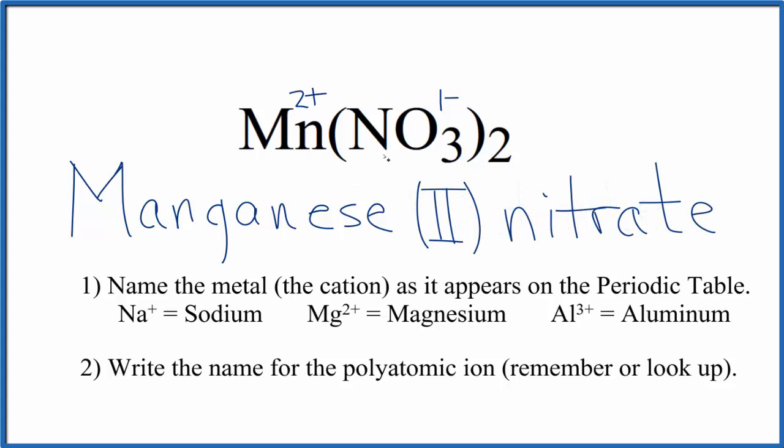So the name for Mn(NO3)2 is manganese two nitrate, and the roman numeral two refers to this two plus up here on the manganese.